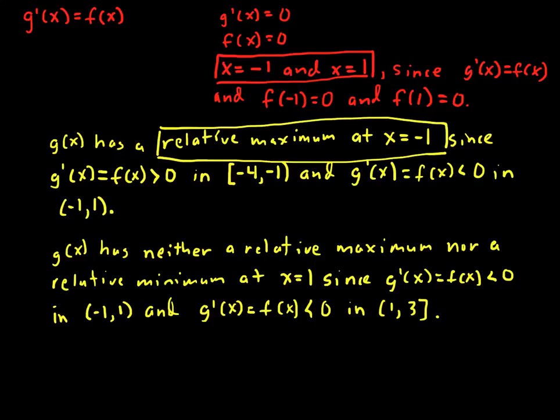and you could probably make an argument about this. So let's see, has neither - you can make an argument without saying all this, you could say g prime does not change signs, this is the first derivative test. Okay?